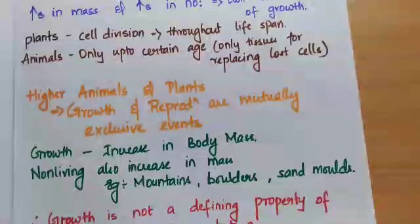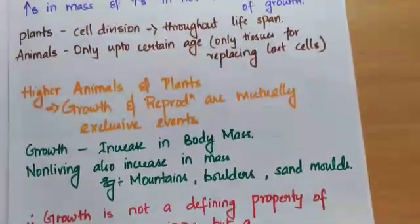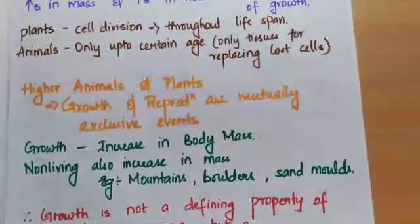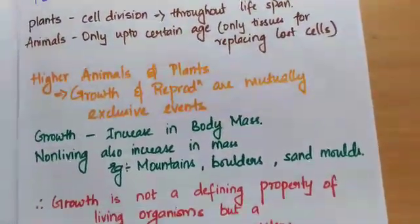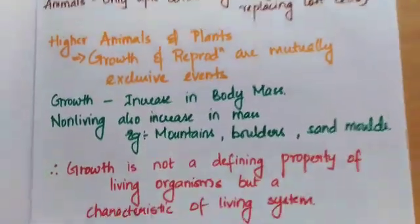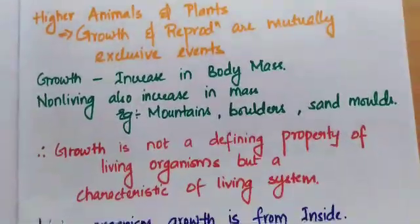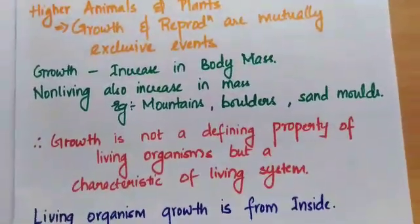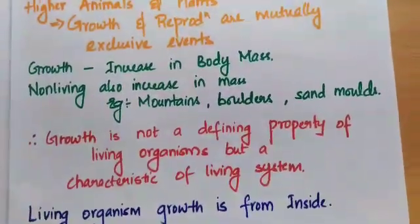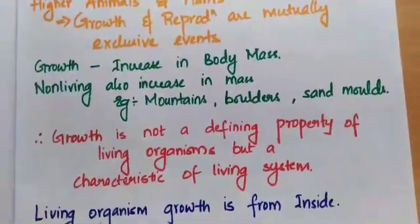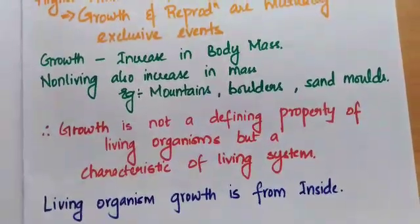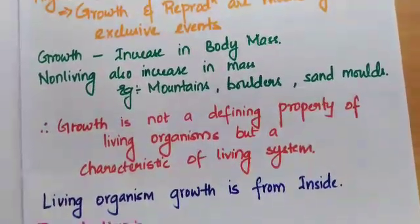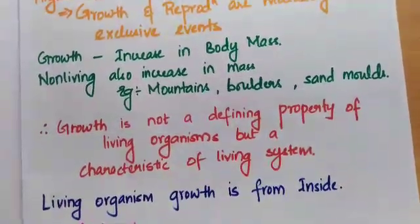In higher animals and plants, growth and reproduction are mutually exclusive events. Growth is considered as the increase in body mass. Therefore, non-living things also increase in mass.